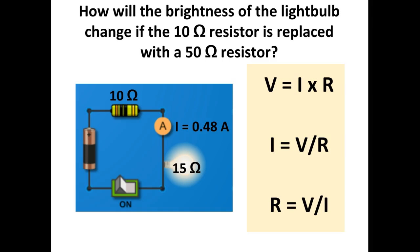Similar question, but slightly differently framed. How will the brightness of the light bulb change if the 10-ohm resistor is replaced by a 50-ohm resistor? Think it through carefully. It will become dimmer. We now have a total resistance of 65 ohms compared to 25 ohms. Greater resistance means less current, and less current means dimmer light bulb.